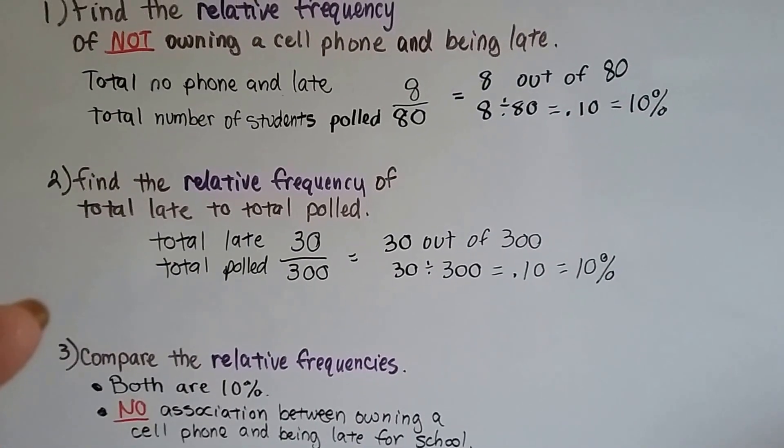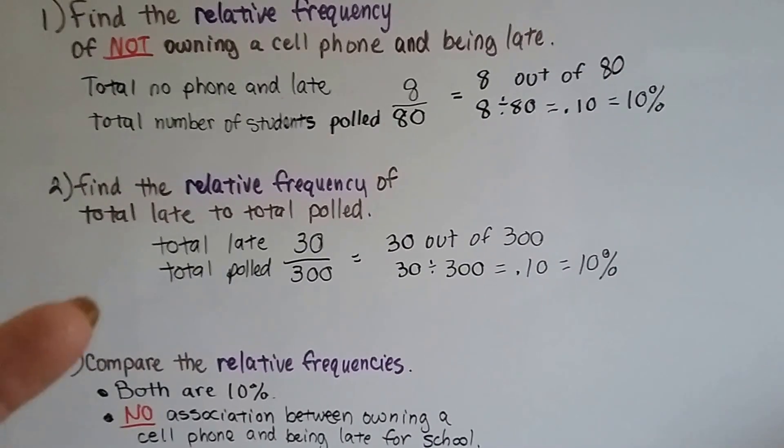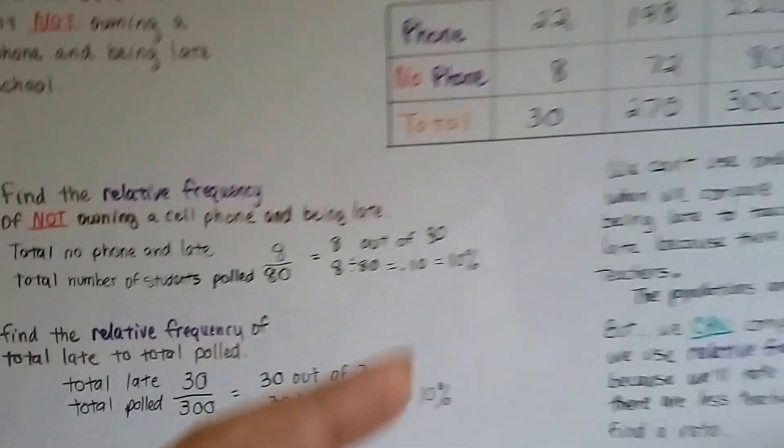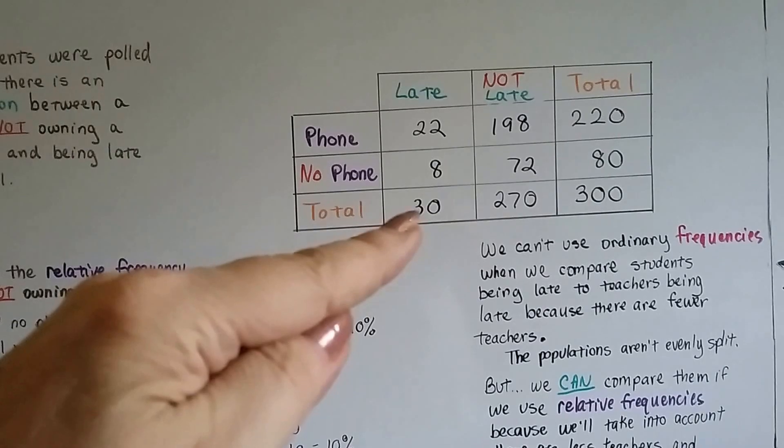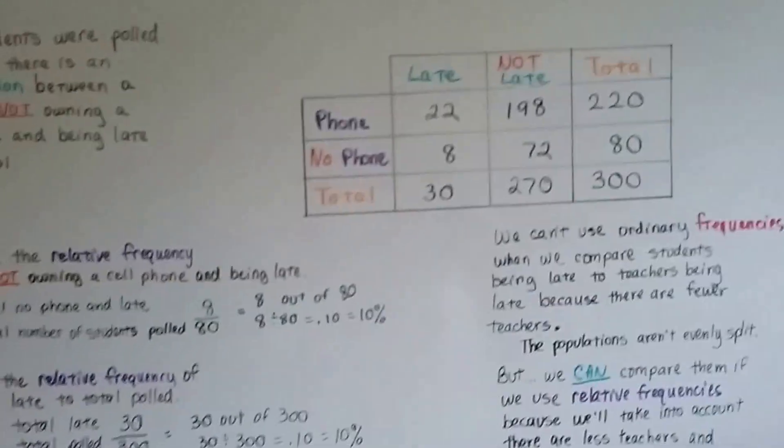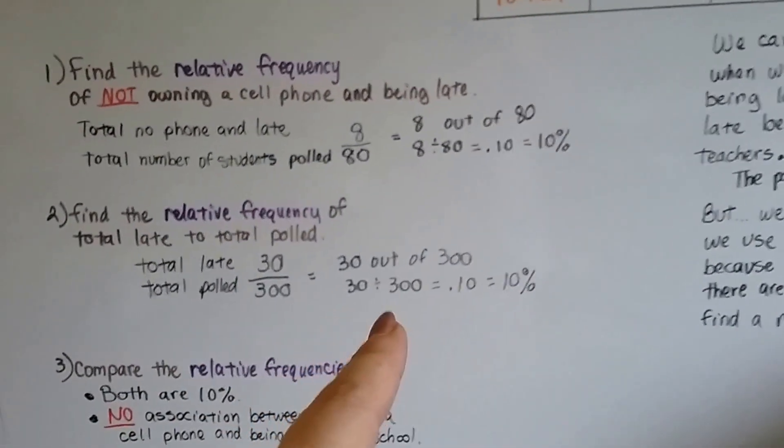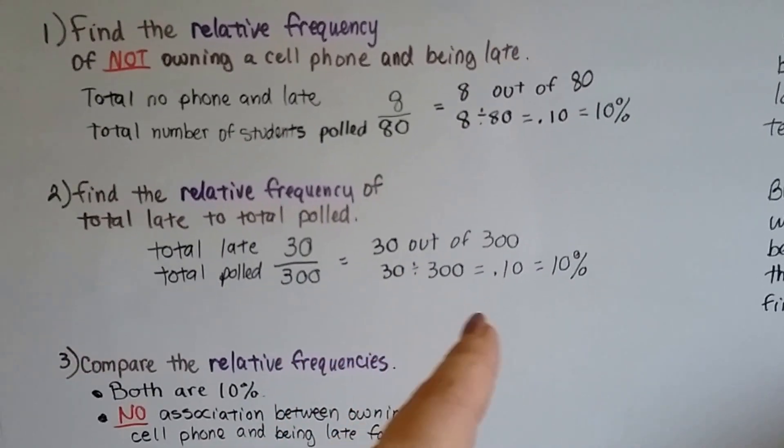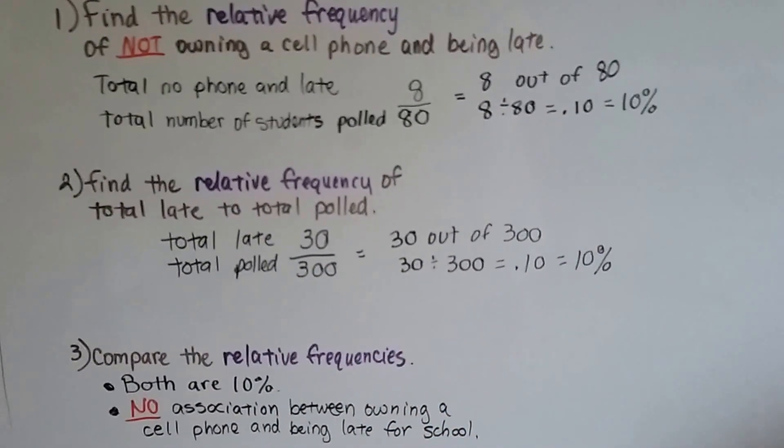Now, we find the relative frequency of the total late to total polled. So, the total that were late, looking down this column, we can see is 30. And the total polled was 300. Well, 30 out of 300 is 30 divided by 300. That's .10. That equals 10%.